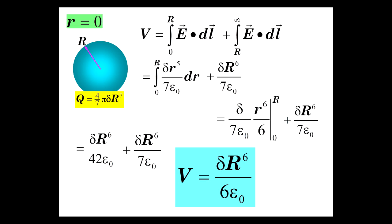Very interesting — there's a little bit more potential at the center than at the edge. At the edge it was δR⁶/(7ε₀); at the center it's δR⁶/(6ε₀) — a higher potential at the center. When we integrate the E-field inward from the surface, we're going against the E-field direction, so the potential rises. Moving against the E-field, we rise in potential by this additional amount, giving us the final potential at the center of the sphere.